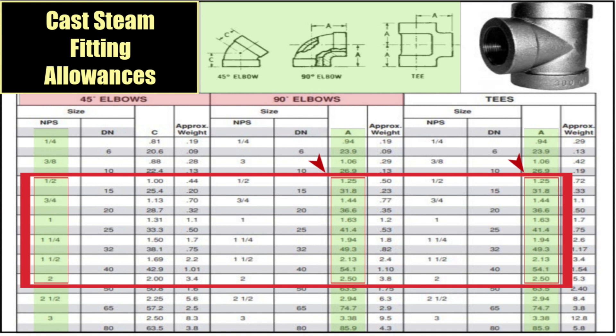For the sake of this video, I'm using a cast steam fitting allowance. Now bear in mind, fitting allowances for black malleable fittings, brass fittings, copper fittings, copper DWV fittings, PVC fittings — those allowances are all going to be different. So make sure if you're mixing and matching fittings, that could throw you off. So we see here that mainly I'm using anywhere from half inch to two inch pipe. In the example at the end of this demonstration, I'm going to be using a piece of three-quarter inch pipe.